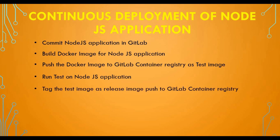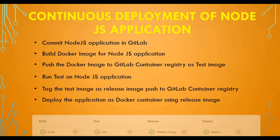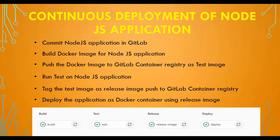If the application passes the test, we will tag the test image as a release image and push it to the container registry again. We'll then have two images — one for test and one for release. Once we have the release image, we'll use Docker commands to deploy our application as a container. There will be four stages in our pipeline: build, test, release, and deploy.